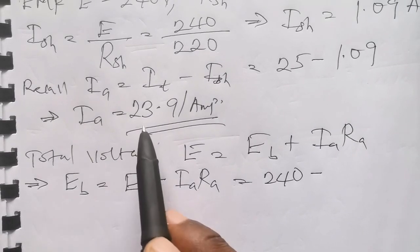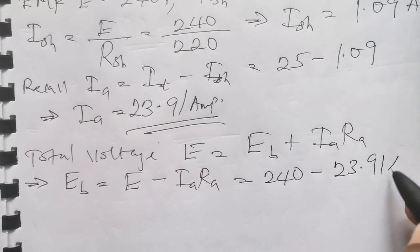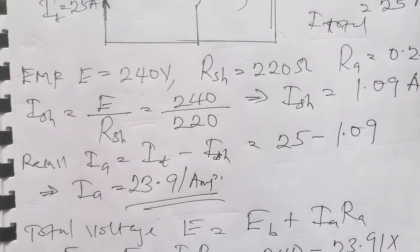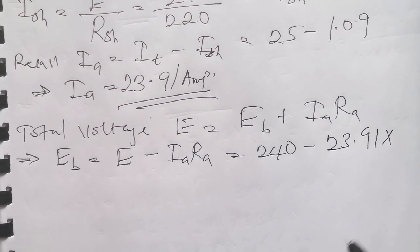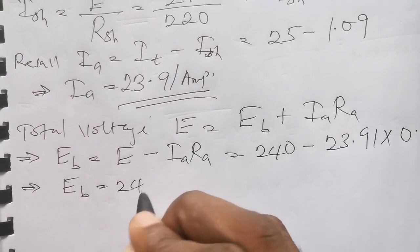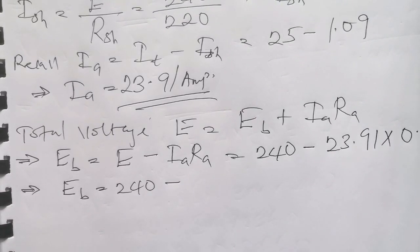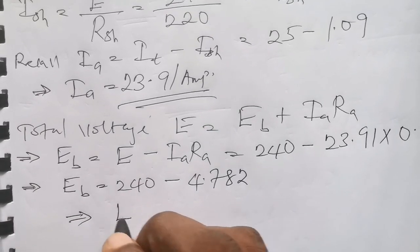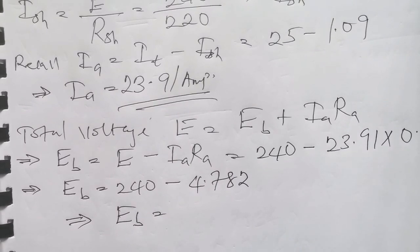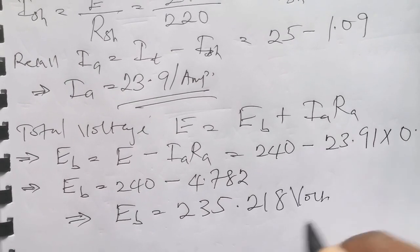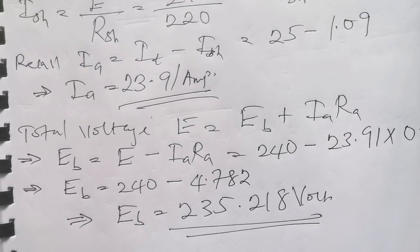So Eb = 240 volts minus (23.91 × 0.2). Calculating: 23.91 multiplied by 0.2 gives us 4.782. Therefore Eb = 240 − 4.782 = 235.218 volts. So the value of the back EMF is 235.218 volts.